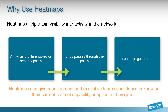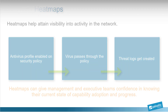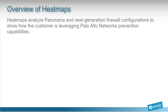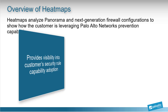Heatmaps can also give management and executive teams confidence in knowing their current state of capability adoption in progress. The Security Policy Capability Adoption Heatmaps analyze Panorama network security management and individual next generation firewall configurations to see how the customer is leveraging our prevention capabilities.